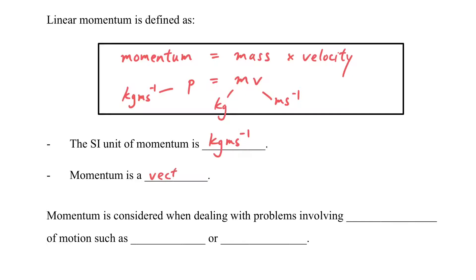Momentum is a vector, that means it has direction. When we consider the momentum, we must be very careful to deal with the positive and negative sign so that it is considered with the correct direction. Usually, it's used to deal with cases with sudden change, for example, collision or explosion.